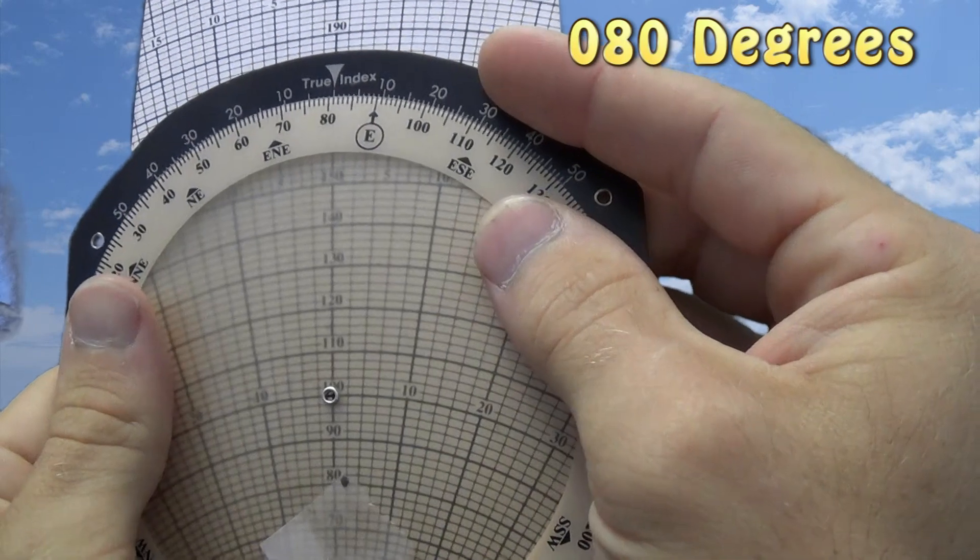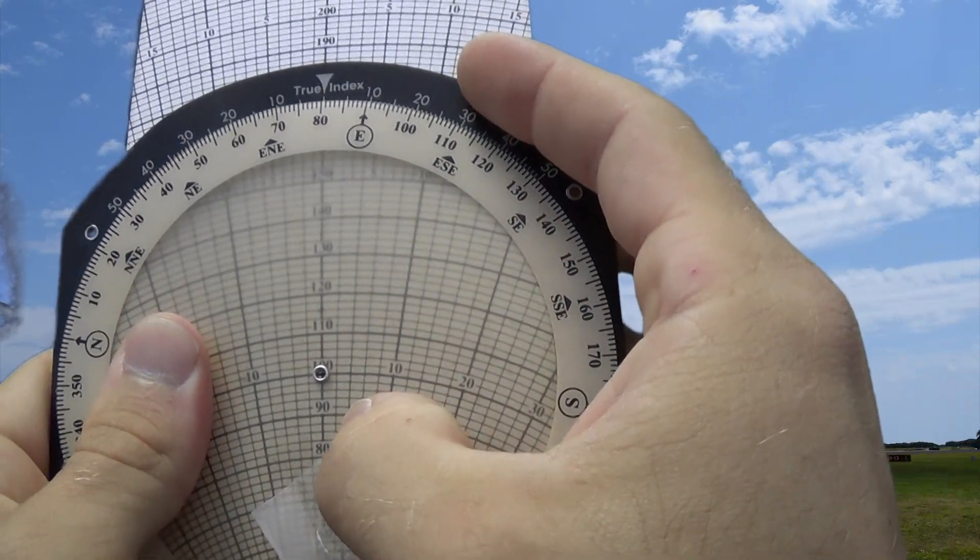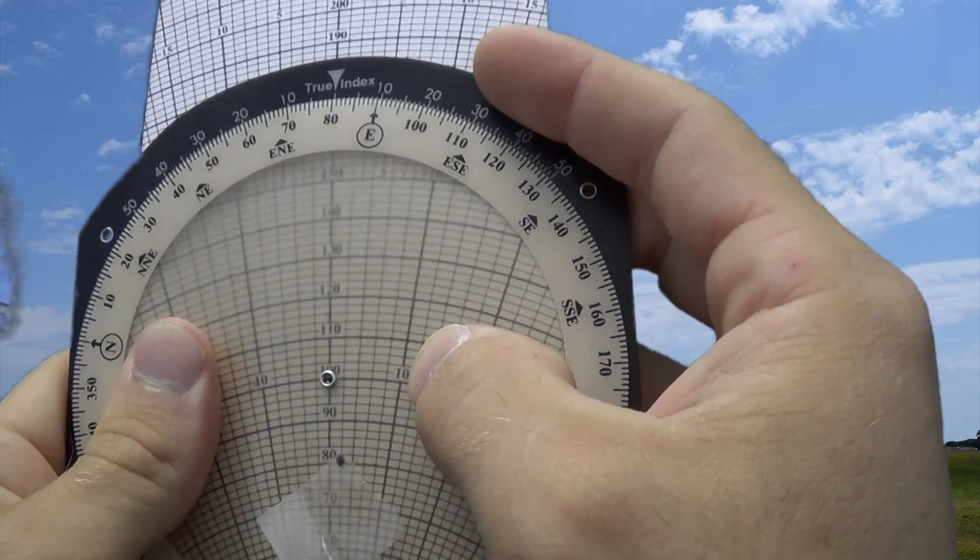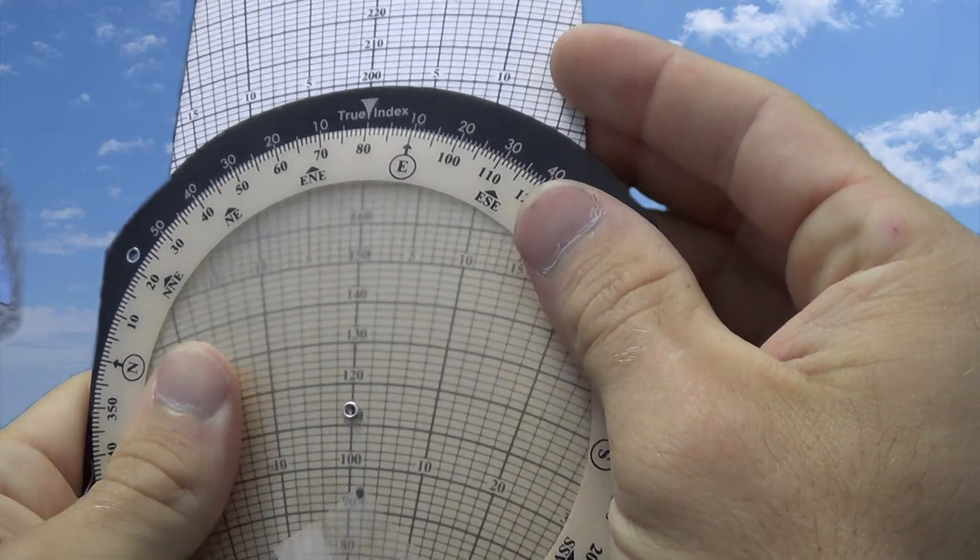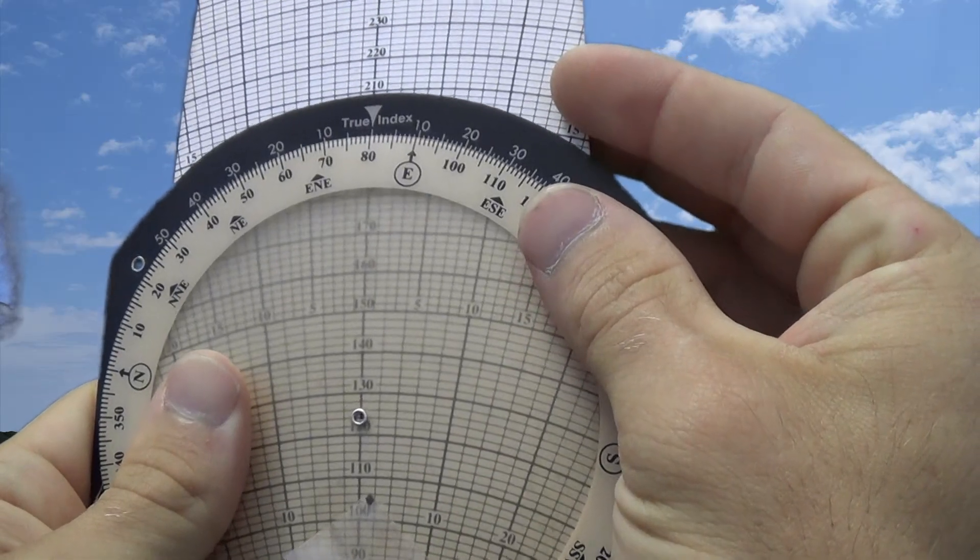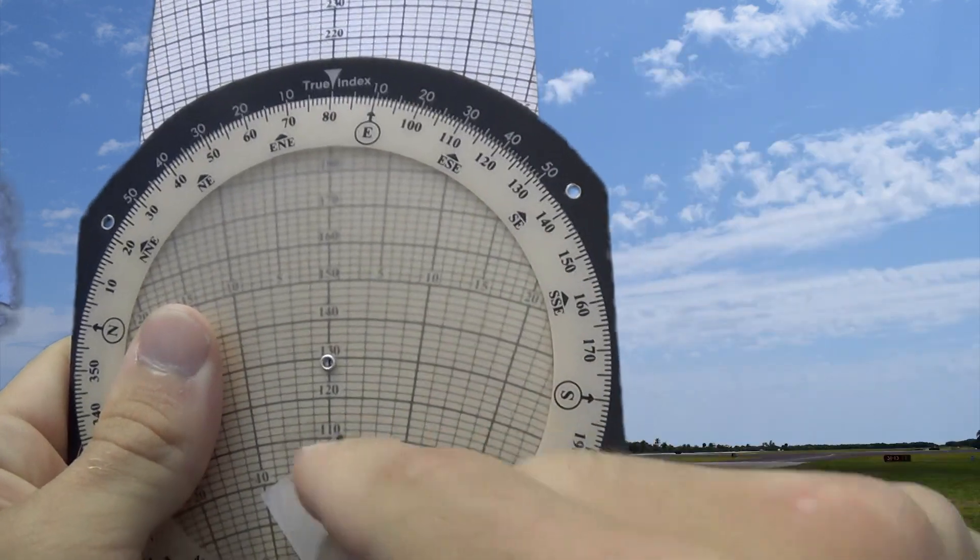So I'm going to dial this around to 080 and then I want to slide my dot up to my ground or my true airspeed. My true airspeed I know is going to be about 110 knots. So slide that little dot to the 110 knot line right there.